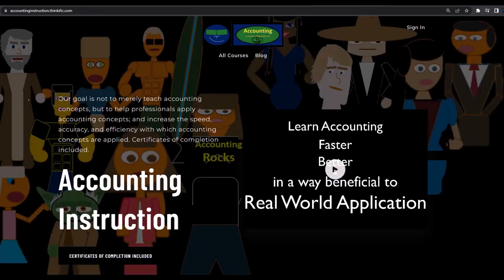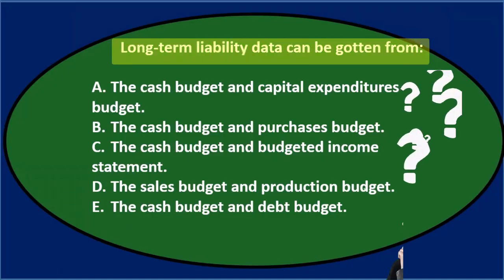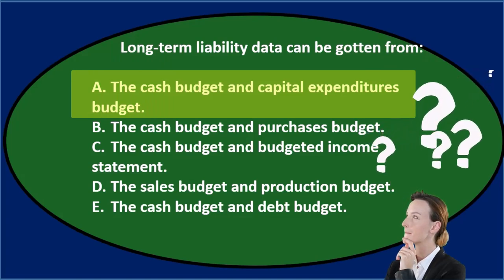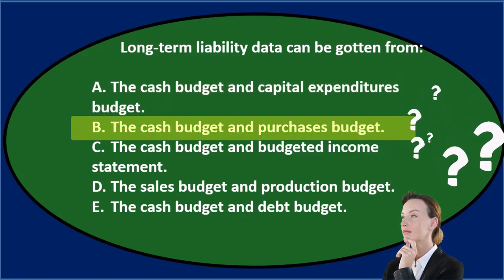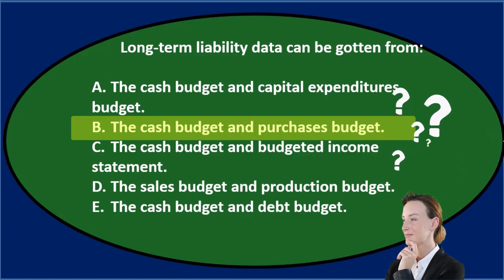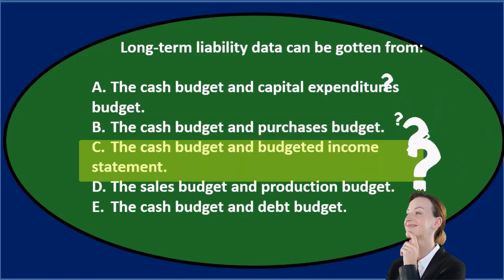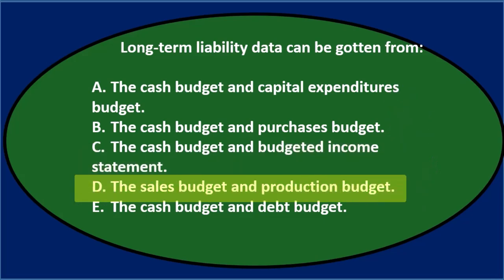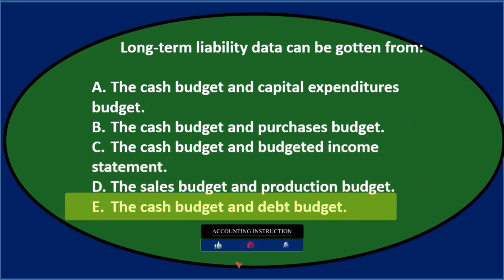If you would like a commercial-free experience, consider subscribing to our website at accountinginstruction.com or accountinginstruction.thinkific.com. Long-term liability data can be gotten from: A, the cash budget and capital expenditures budget; B, the cash budget and purchases budget; C, the cash budget and budgeted income statement; D, the sales budget and production budget; or E, the cash budget and debt budget.